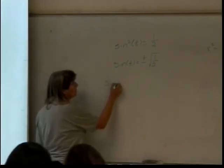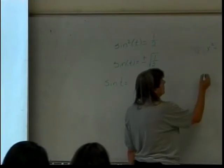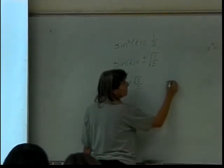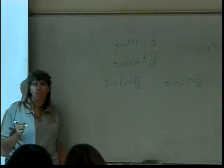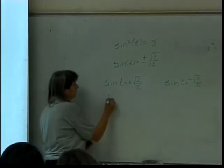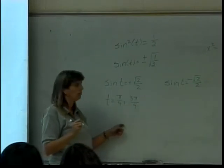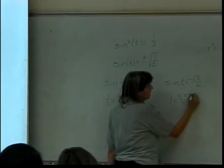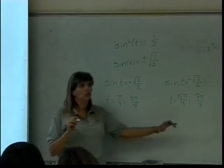So this is two equations really. The sine of t equals the positive square root of two over two, and the other equation is the sine of t equals the negative square root of two over two. Where is the sine of t equal to the square root of two over two? Pi over four and three pi over four. Where is the sine of t equal to the negative square root of two over two? Five pi over four and seven pi over four. How many of you are thinking, let's just memorize the unit circle — this makes life really nice.